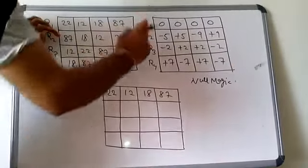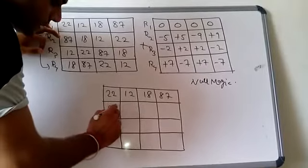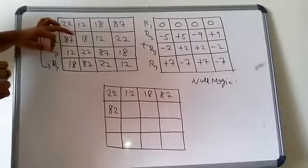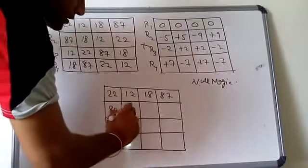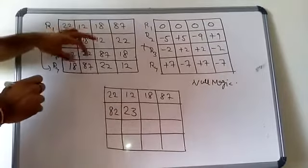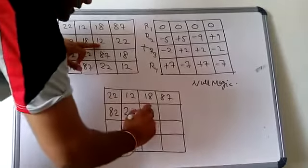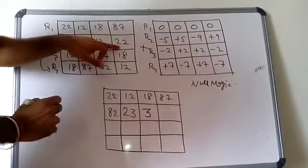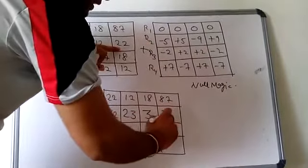Now the next row is 87 minus 5, that is 82. 18 plus 5, that is 23. Now 12 minus 9, that is 3. 22 plus 9, that is 31.